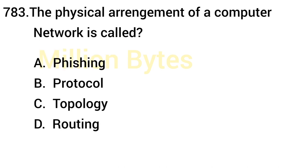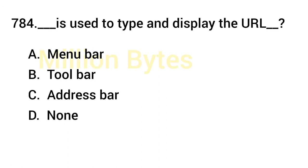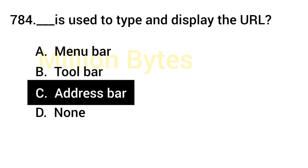The physical arrangement of a computer network is called Topology. Which component is used to type and display the URL? Answer is the Address Bar.